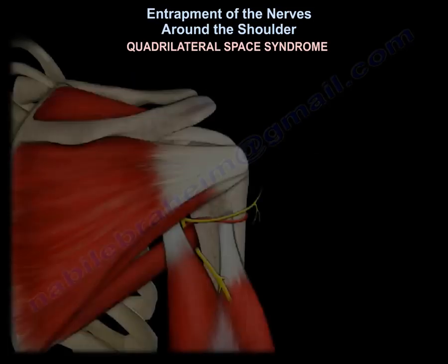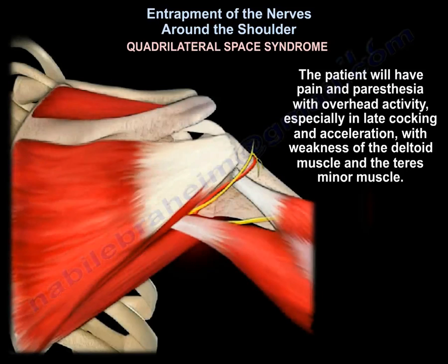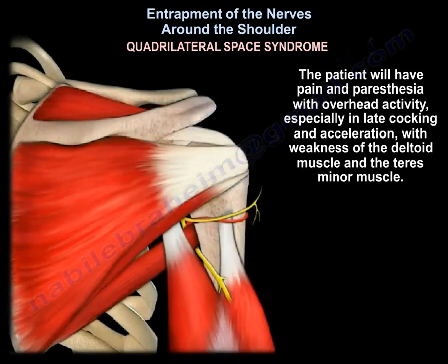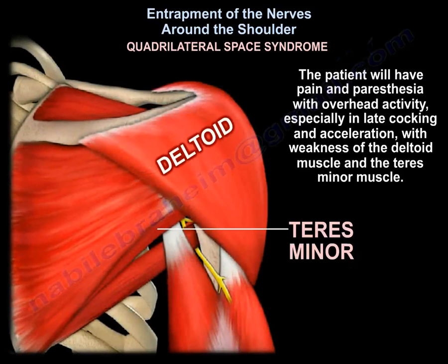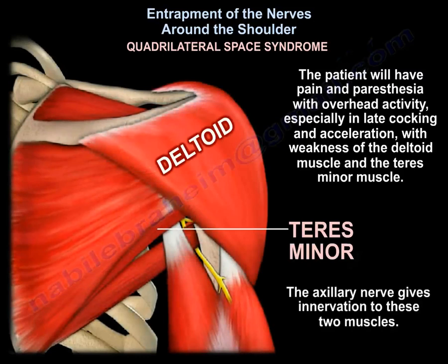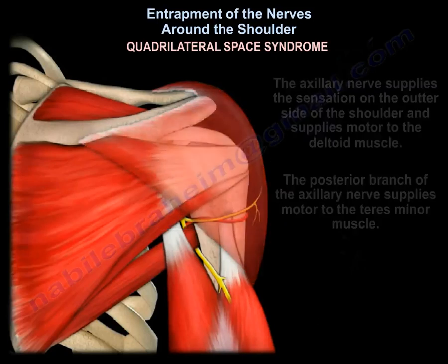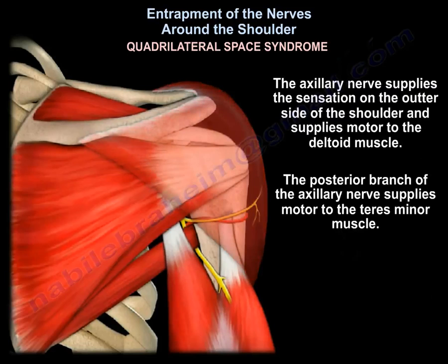The patient will have pain and paresthesia with overhead activity, especially in late cocking and acceleration, with weakness of the deltoid muscle and teres minor muscle. The axillary nerve gives innervation to these two muscles and supplies sensation on the outer side of the shoulder.